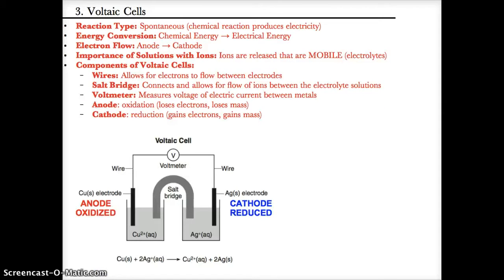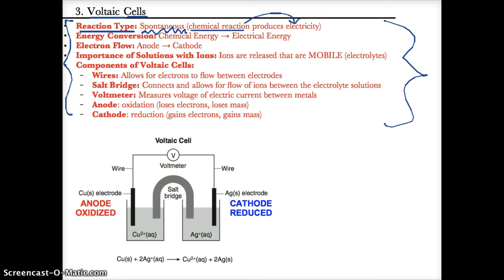Now let's focus on voltaic cells. The type of reaction in voltaic cells is spontaneous — the reaction happens on its own. During a spontaneous reaction in a voltaic cell, a chemical reaction leads to the production of electricity. In terms of energy conversion, chemical energy becomes electrical energy.